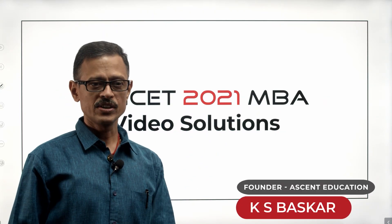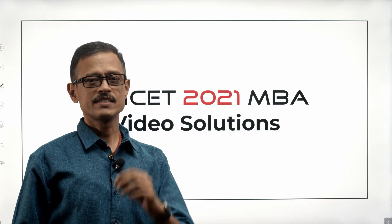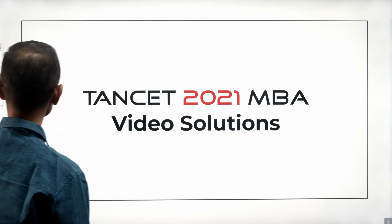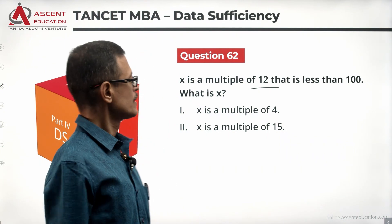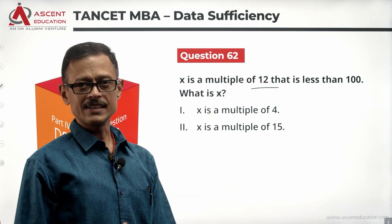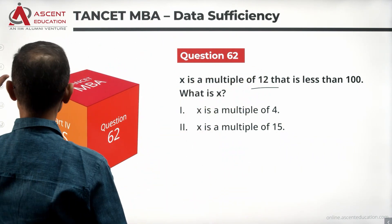TANCET 2021 MBA question period video solution. It is a data sufficiency question, question number 62. An interesting question on number properties. X is a multiple of 12 that is less than 100. What is the value of X?